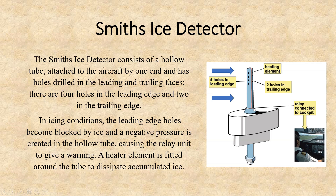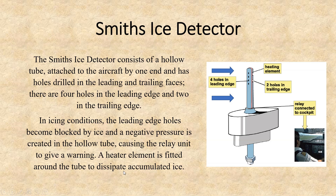If ice or snow accumulation has occurred over the holes, the pressure differential changes, triggering an alarm in the cockpit. The Smith's ice detector consists of a hollow tube attached to the aircraft by one end, with holes drilled in the leading and trailing faces. In icing conditions, the leading-edge holes become blocked by ice and a negative pressure is created in the hollow tube, causing the relay unit to give a warning. A heater element is fitted around the tube to dissipate accumulated ice.